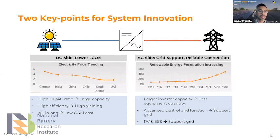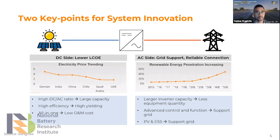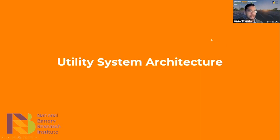Inverter manufacturers are also putting bigger and bigger inverter capacities. Ten years ago inverter capacity was only 30–60 kW. Right now at Sungrow we have 300 kW — that's five times higher — so we need fewer inverters for the same megawatt-scale utility plant.